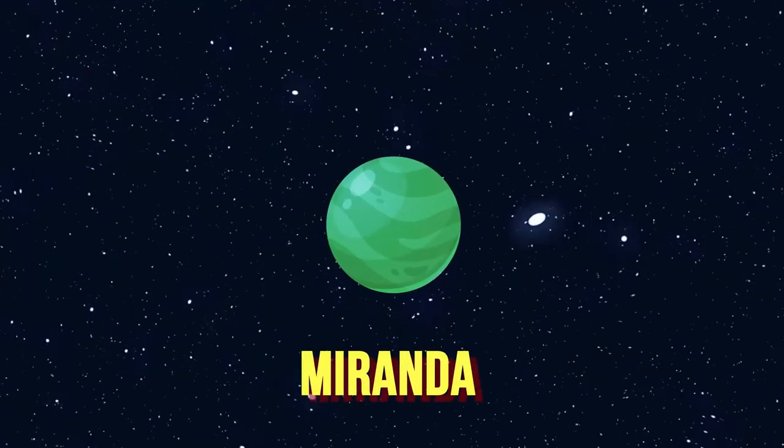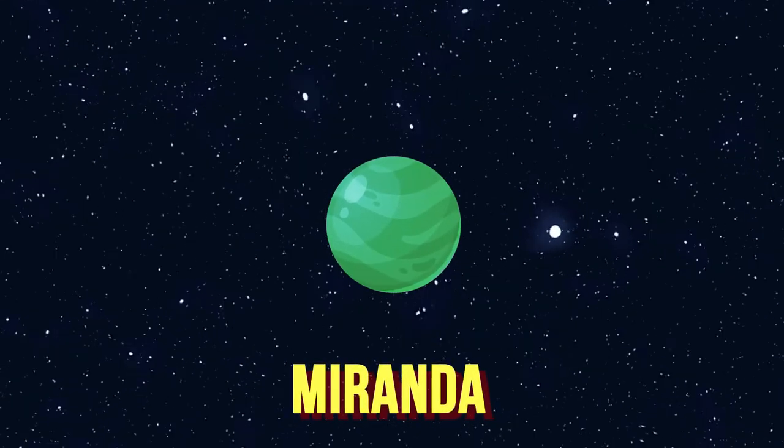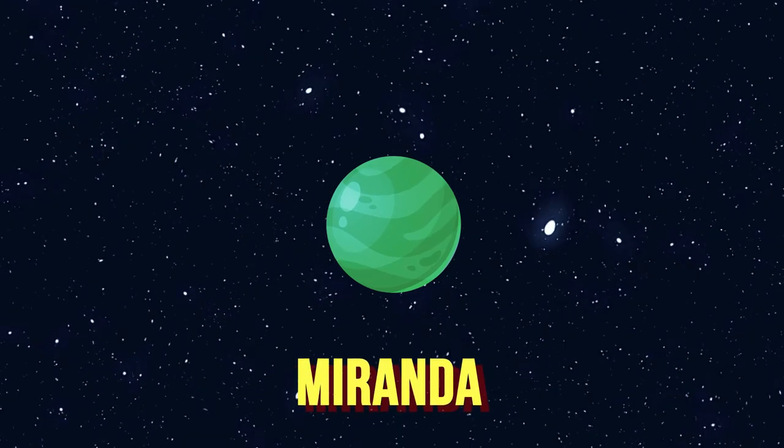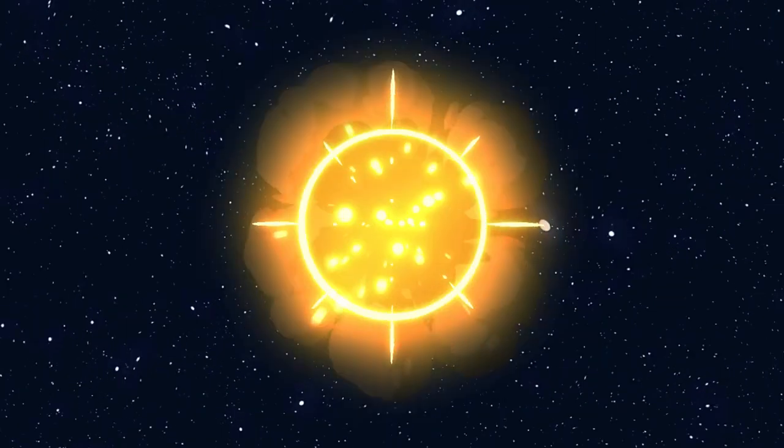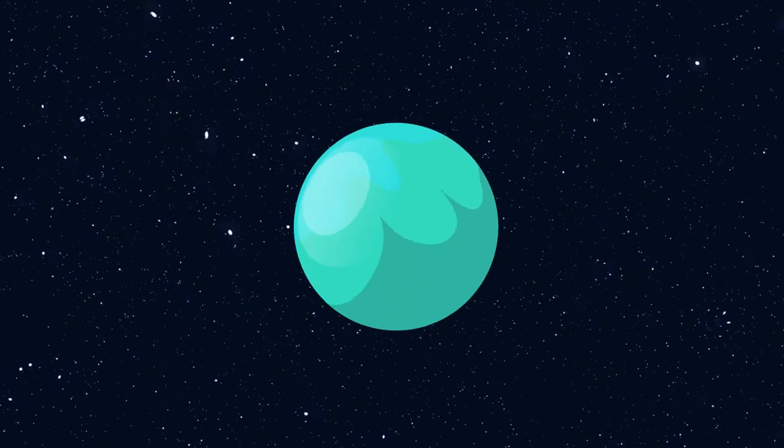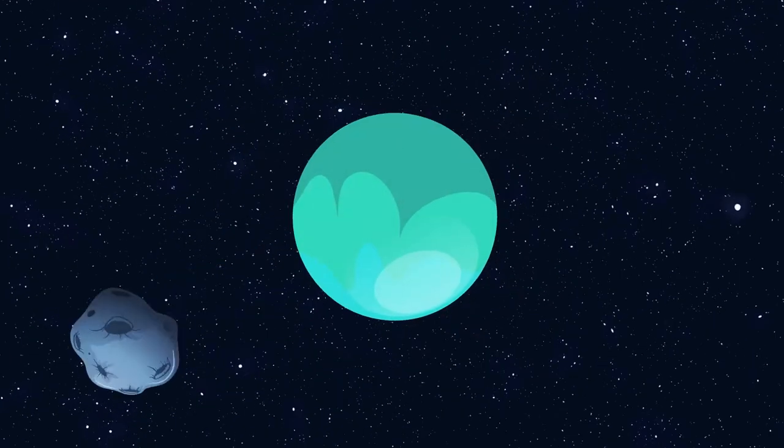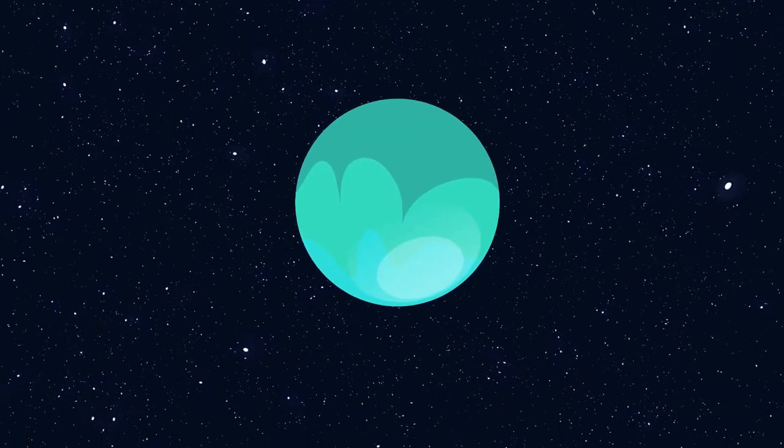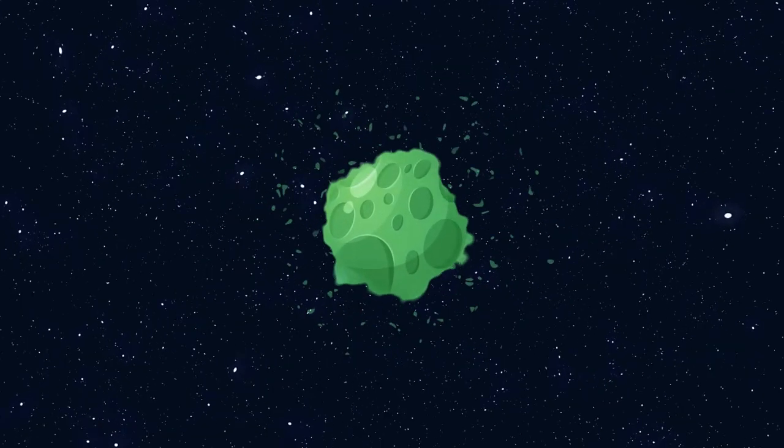The biggest Uranus' moon, Miranda, is actually this kind of a zombie satellite, because it was completely destroyed once by some very big celestial body, which first crashed into Miranda and then hit Uranus, turning it upside down. Falling to pieces, Miranda decided not to despair and just gathered again with the help of the force of gravity.